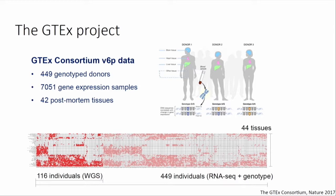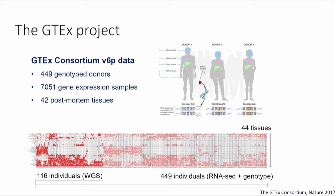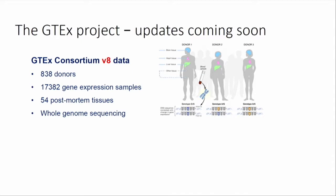The project I'll tell you about is the GTEx project, a really good resource for beginning to interpret some of these GWAS variants because it covers multiple cell types and multiple tissues. The GTEx data in the last published release — the V6 data — has almost 500 donors and expression samples across 44 different tissues. This gives us over 7,000 total gene expression samples of about 500 individuals where we can look at the association between genotype and gene expression across nearly 50 tissues. This will be updated soon to the final public release, the V8 data, which will give us nearly 1,000 donors — 838 used in EQTL analysis — over 54 post-mortem tissues, and all individuals come with whole genome sequencing in addition to genotyping and gene expression data.